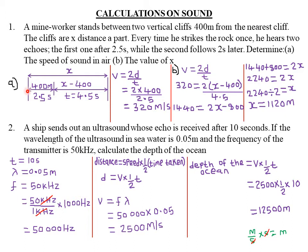Every time the mine worker strikes the rock once, he hears two echoes. The first echo comes from the nearest cliff, and the second from the farther cliff. The nearer cliff produces its echo first because an echo is a reflected sound — the closer the reflector, the faster the echo returns to the mine worker.